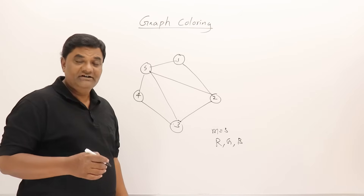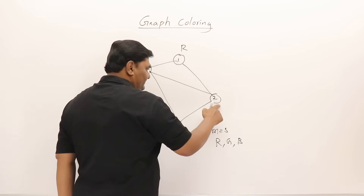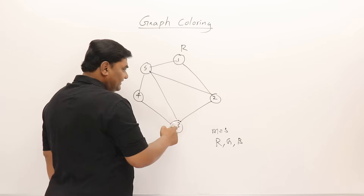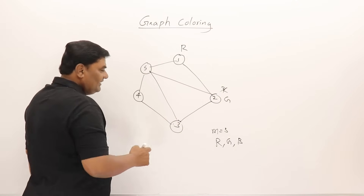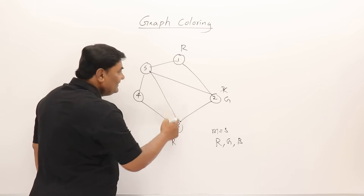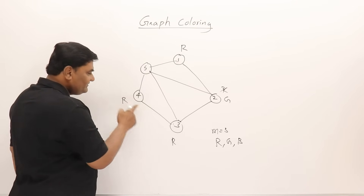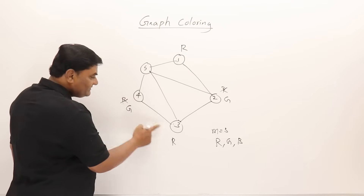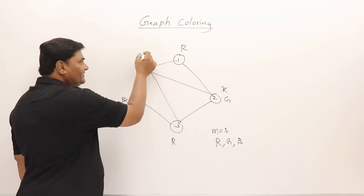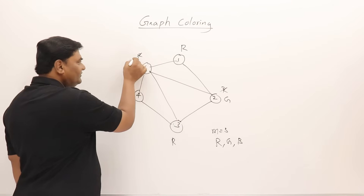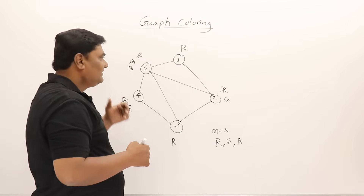Starting from vertex 1, give it red color. For vertex 2, neighbors are 1 and 3; since vertex 1 already has red, vertex 2 cannot take red — so give it green. For vertex 3, red is not adjacent to vertex 1 here, so it can take red. For vertex 4, red is adjacent, green is adjacent, so neither works — but blue is different from all neighbors, so vertex 4 takes blue.